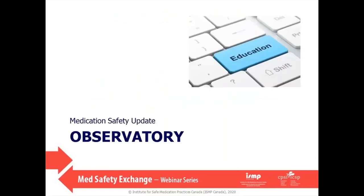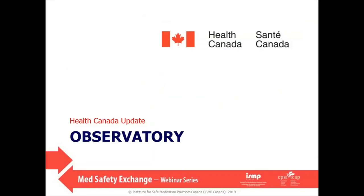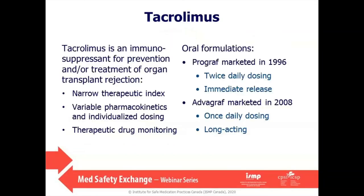Moving to the Observatory, our first update is from Health Canada. Tacrolimus is an immunosuppressant used to prevent or treat organ transplant rejection. It has a narrow therapeutic index and variable pharmacokinetics between patients, so doses must be individualized and blood concentration monitoring is required. Until recently, two distinct oral formulations with different dose requirements were available in Canada: ProGraph, first marketed in 1996, and the long-acting formulation Advagraf in 2008, which has the advantage of once-daily dosing.